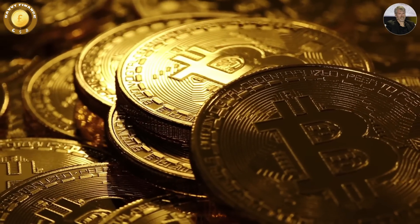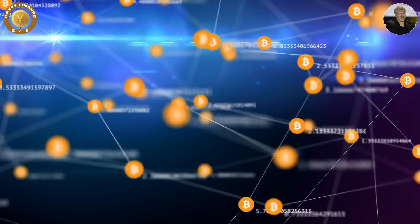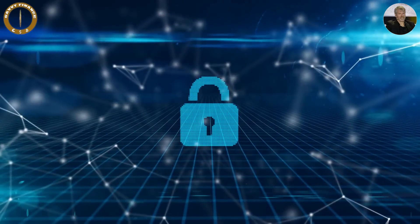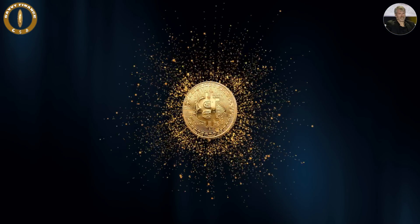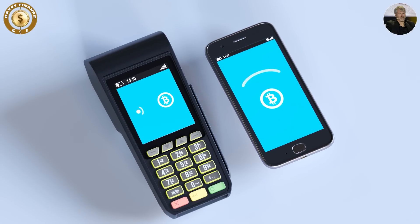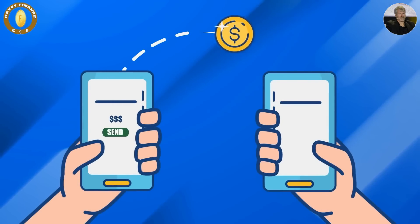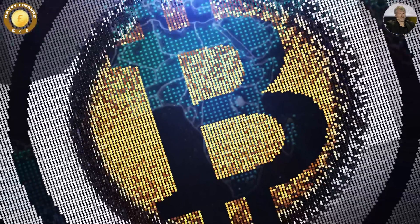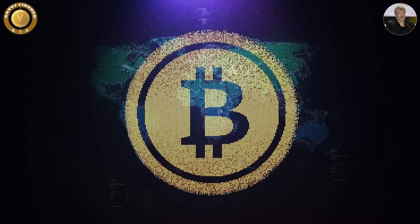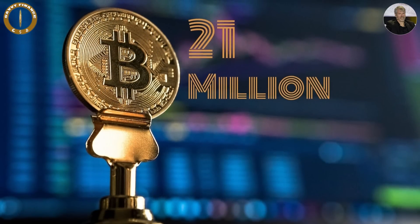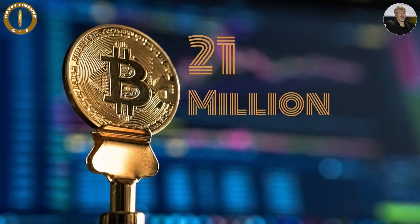Bitcoin offers several advantages over fiat currency. It operates on a decentralized network, which eliminates the need for a central authority or intermediary, providing increased security, greater transparency, and a higher degree of privacy and anonymity. Transactions are secured through advanced cryptographic techniques, and fees are generally lower than those for fiat currency transactions, particularly for international transactions. Additionally, Bitcoin is accessible to anyone with an internet connection, regardless of their location or financial status. It also has a limited supply with only 21 million Bitcoins that can ever exist, making it a deflationary currency that could appreciate in value over time.